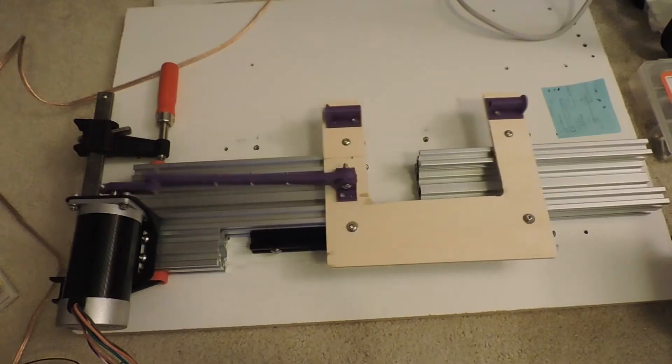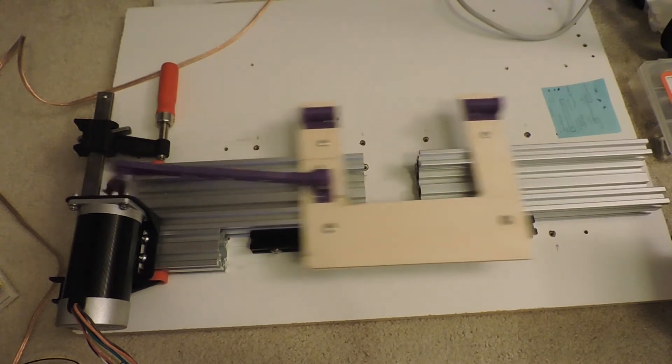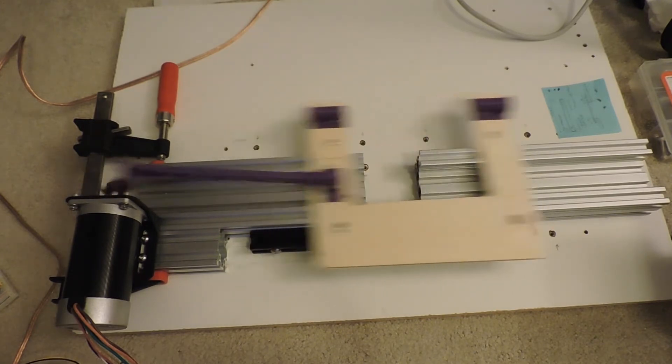So then I switched to a single piece C frame from plywood and V rollers in the C beam profile, and this was very smooth.